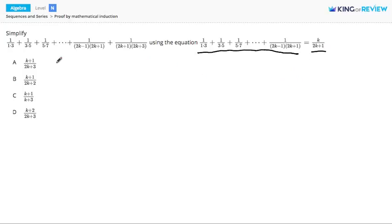We want to use that to simplify the exact same series with one term added: 1 over 2k plus 1 times 1 over 2k plus 3.